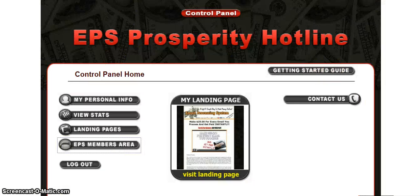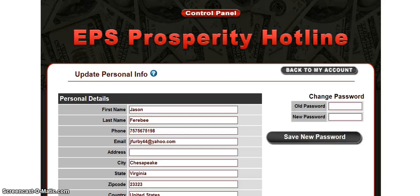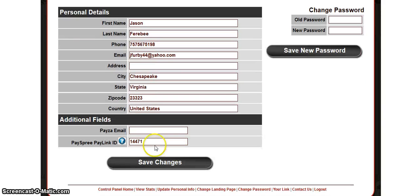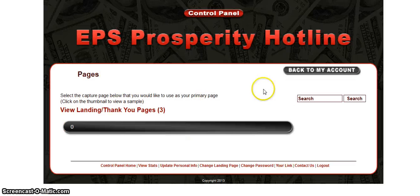They're gonna give you a back office with your own personal info — here's mine. What you want to do is put your personal info in here and set up your payment button. You put your four digits here, then you go to your landing page. They actually got a new landing page which I'm currently using, and it's converting.